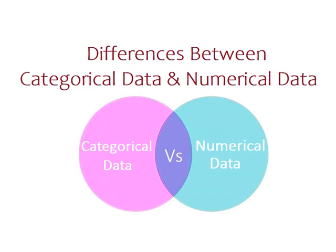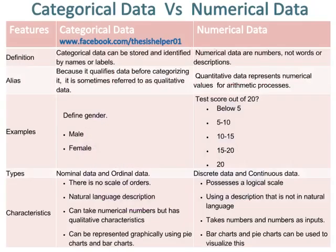Differences between categorical data and numerical data. Categorical data versus numerical data: categorical data can be stored and identified by names or labels, whereas numerical data are numbers, not words or descriptions.